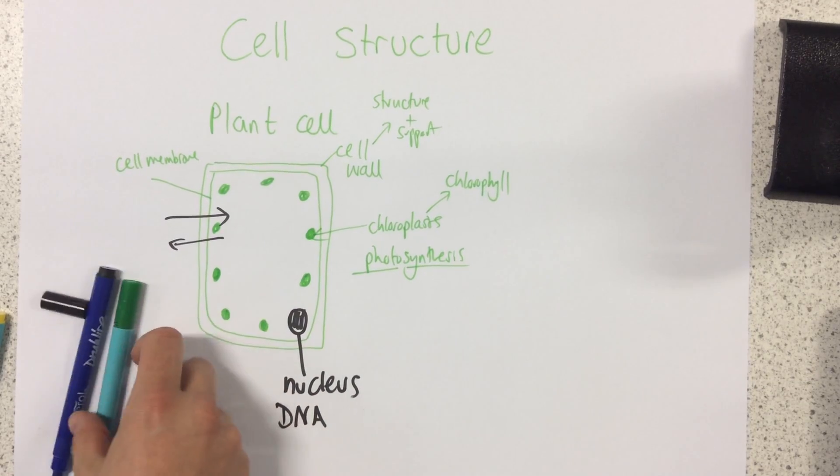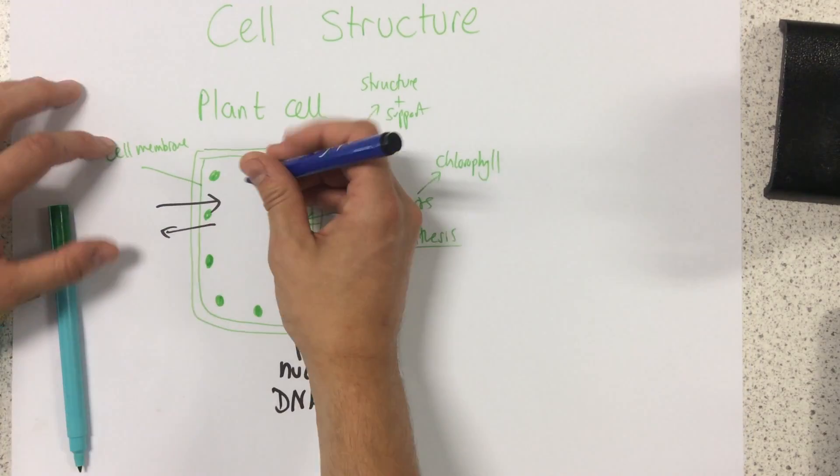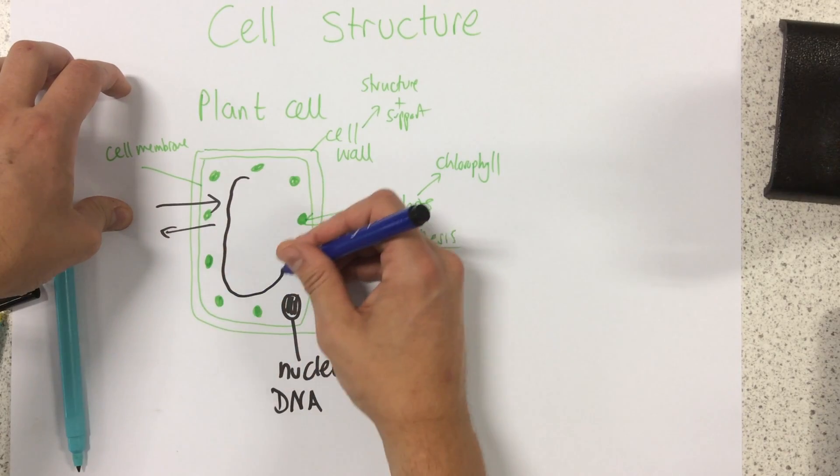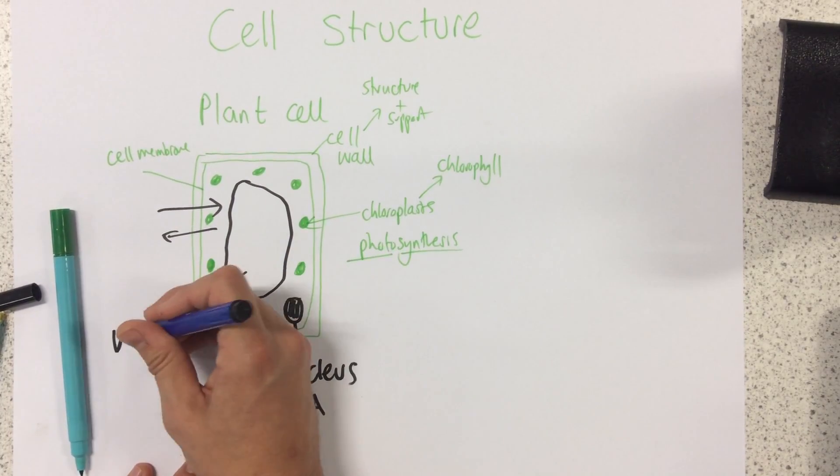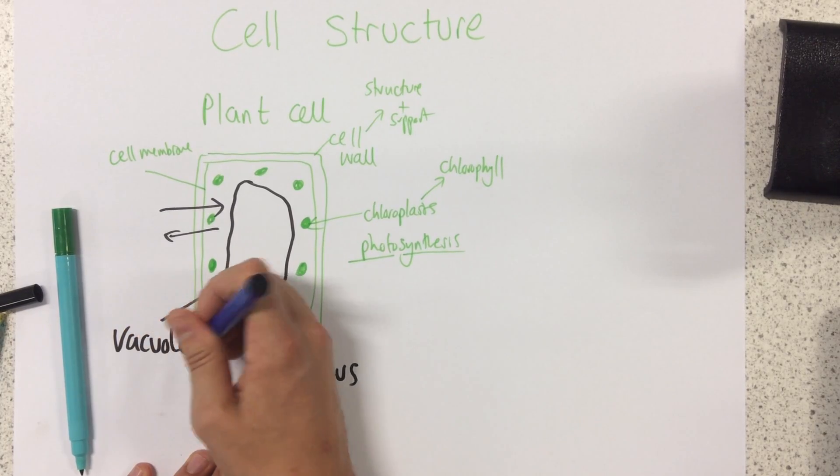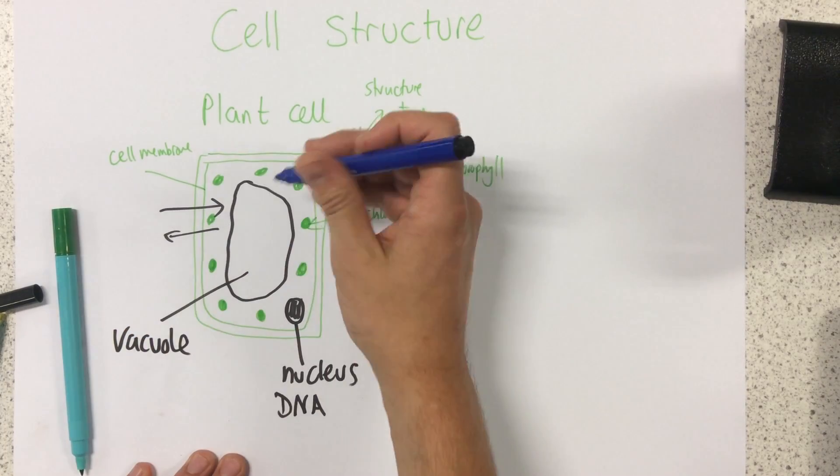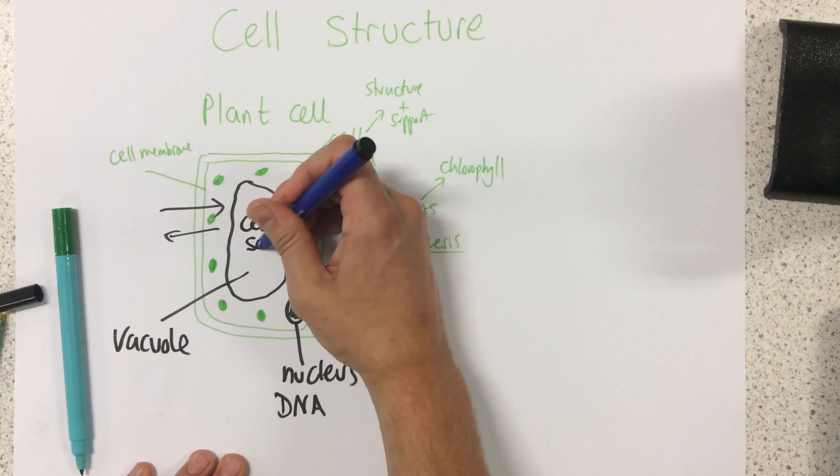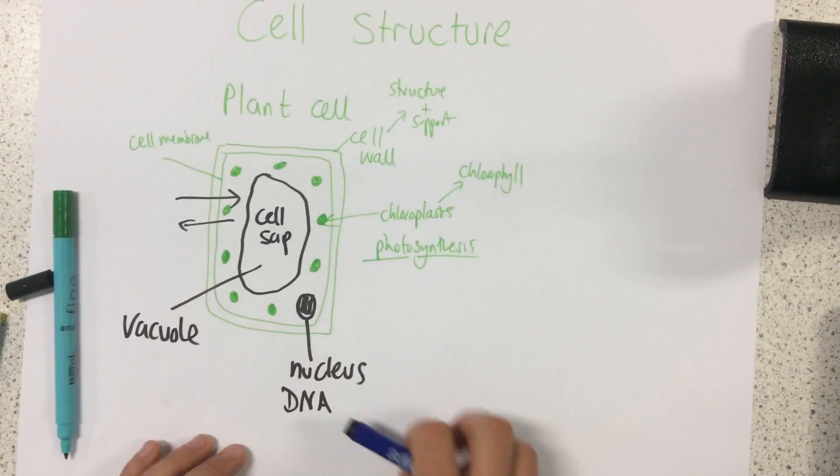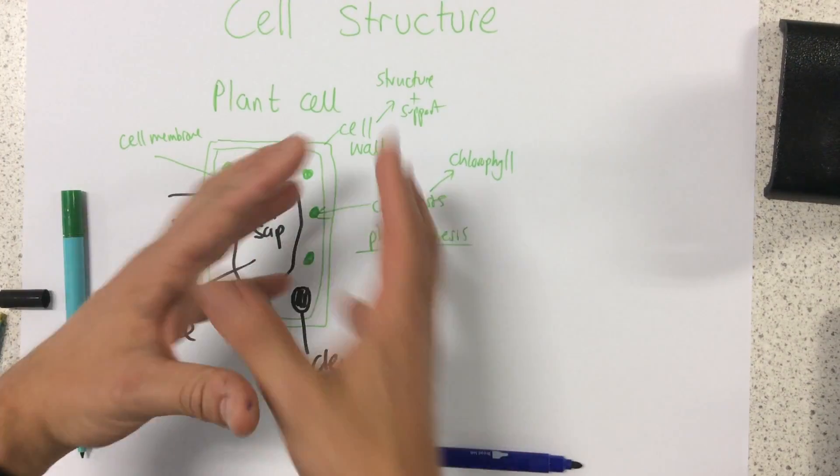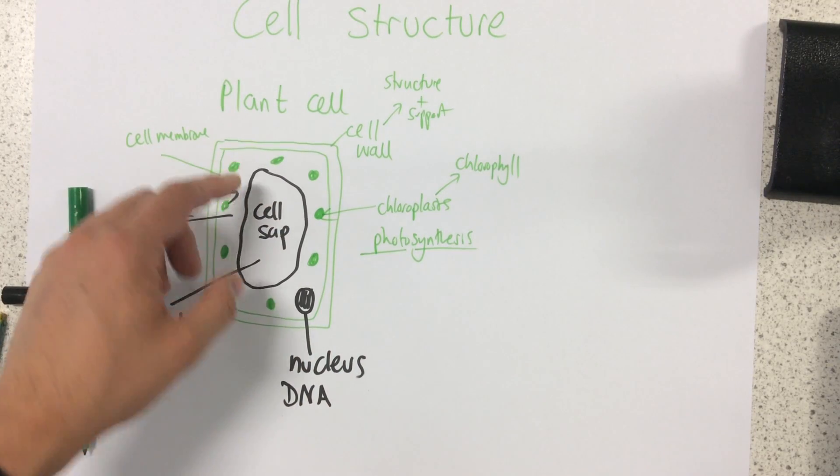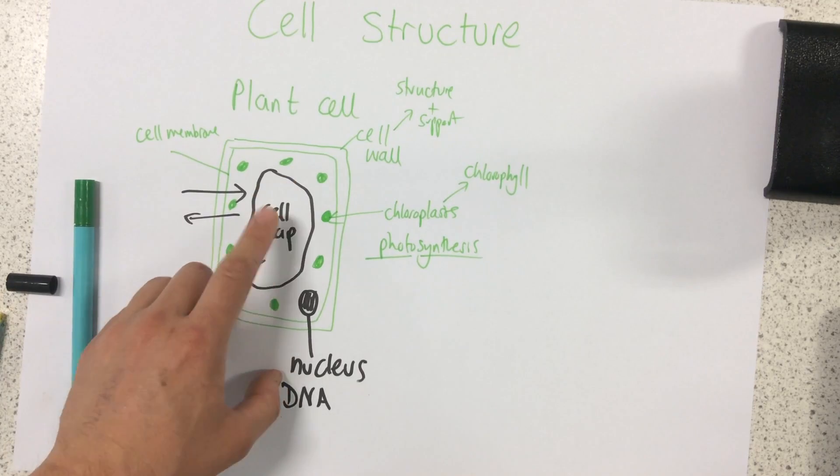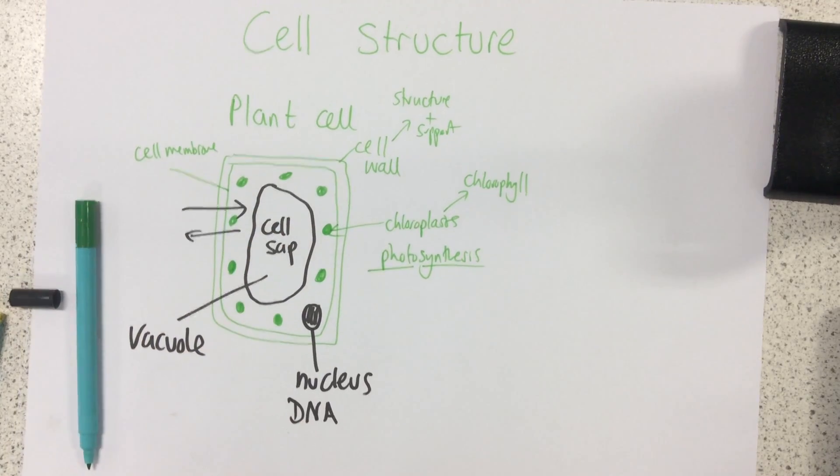Now next up we have this big structure in the middle of plant cells called a vacuole. Now this vacuole contains cell sap. Because it contains sap it allows the plant cell to have its particular shape. It allows the cell to remain turgid. So it's a weak solution of sugar and salts contained within the middle, the vacuole.